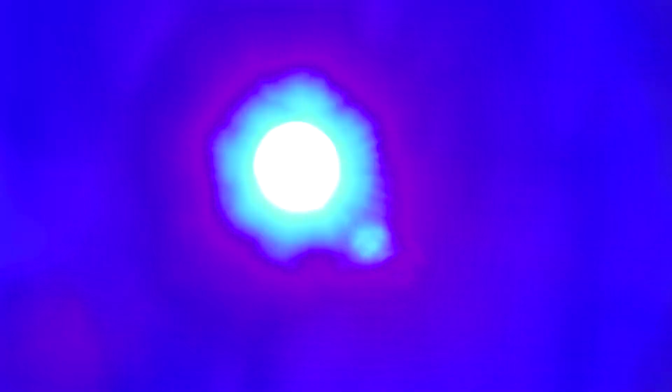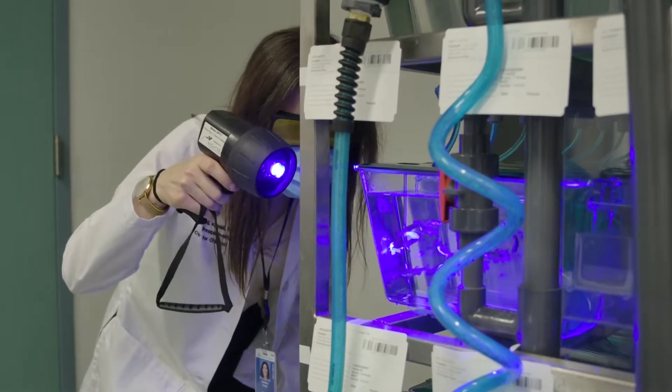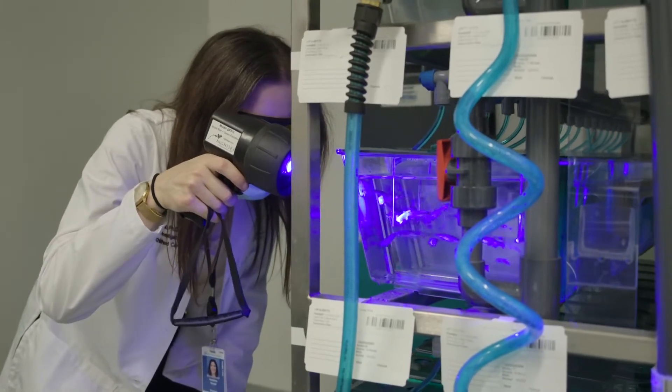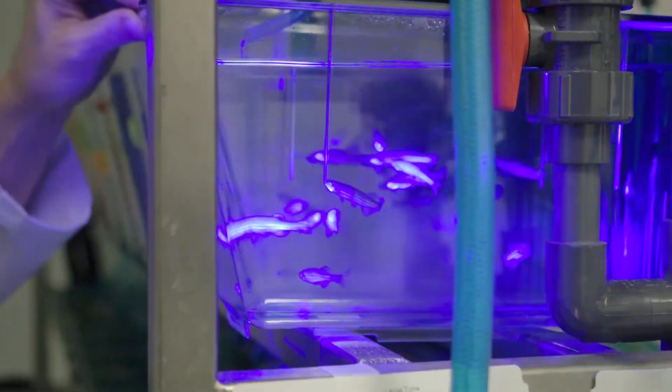We use the fluorescence, which is actually linked to the human cancer gene. So everywhere you see a bright green cell on the fish, or at least I can see it, that means that there's a cancer forming in the fish.